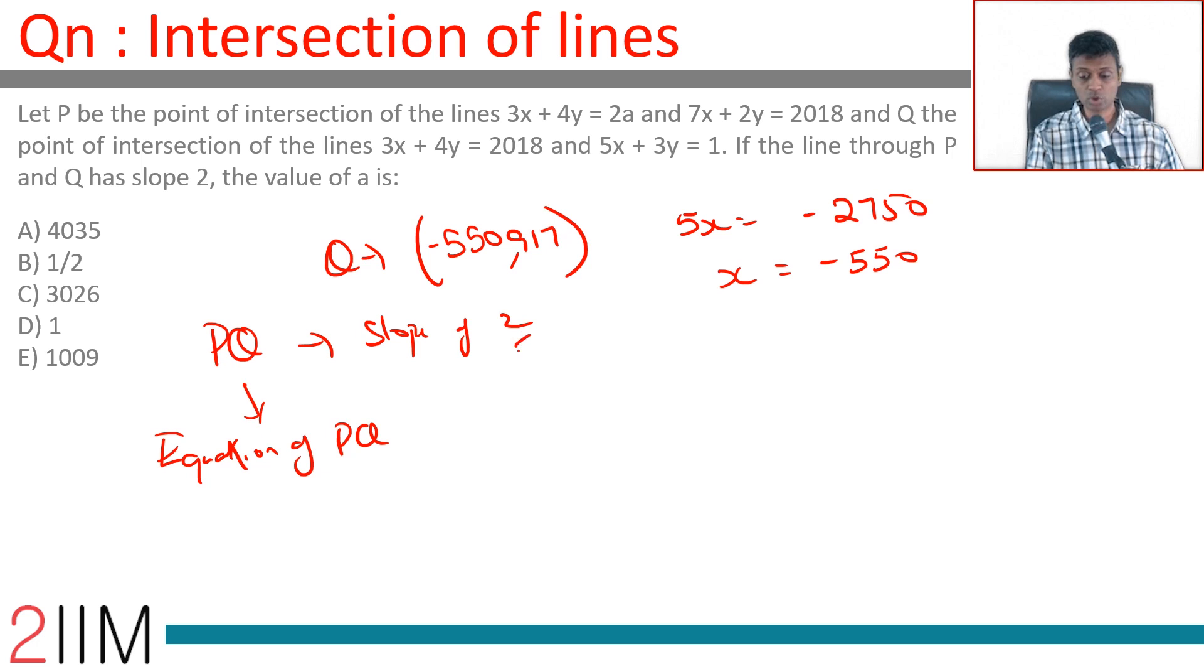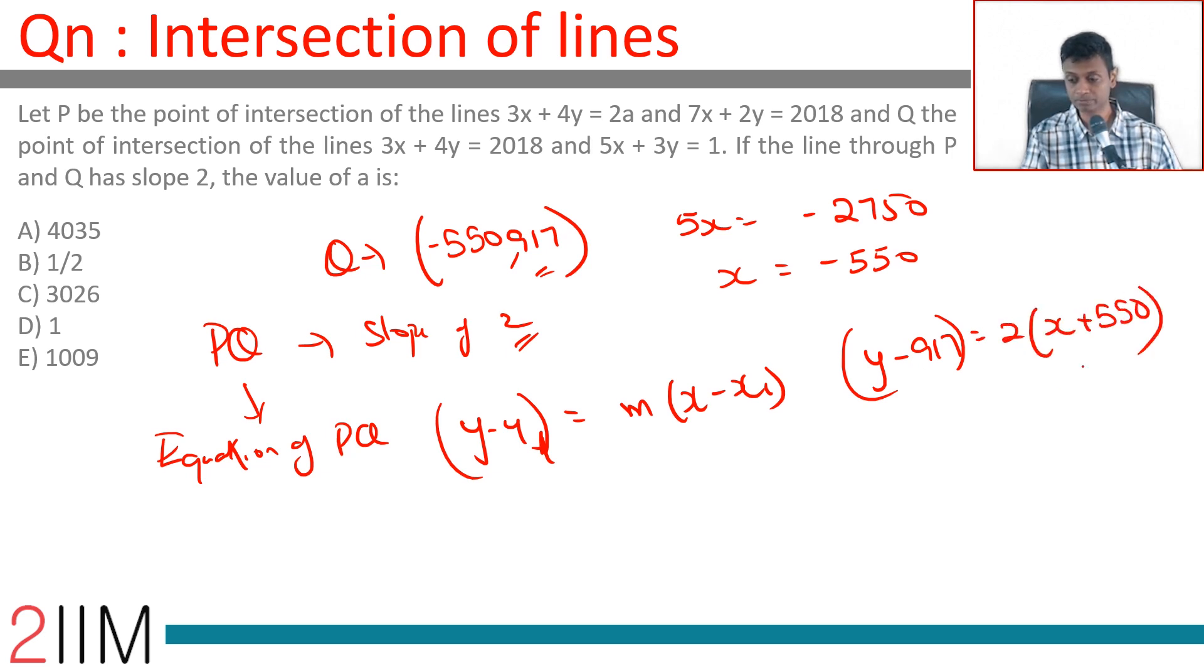We know slope, we know a point, we can say y - y₁ = m(x - x₁), or y - 917 = 2(x + 550). This is the equation of PQ.